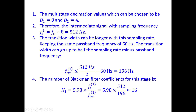Calculating the filter order for the first stage using the same formula: N1 = 5.98 × 512 / 196, which comes out to be 16. This is a very low filter order obtained after using the two-stage approach. This is only the first stage — we still need to calculate the filter order for the second stage.